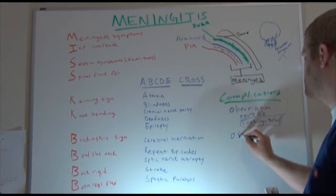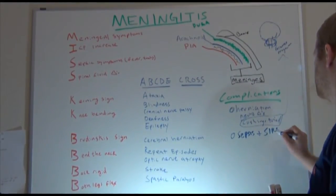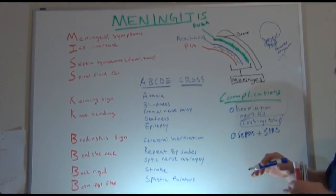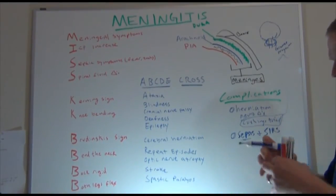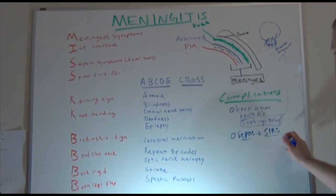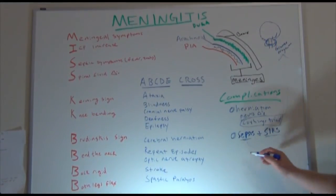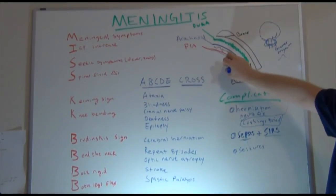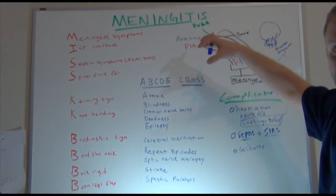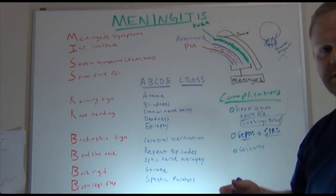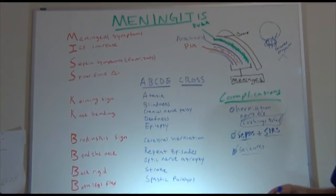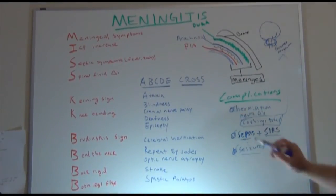Other things to watch for are sepsis and SIRS — Systemic Inflammatory Response Syndrome. If meningitis is the result of a bacterial infection and that infection becomes severe, it can lead to sepsis, septic shock, and massively dilated vessels. You can also have seizures: as the inflammation occurs in contact with brain tissue and that brain tissue becomes irritated, we can have seizures. Put your patient on seizure precautions in the acute period, and monitor temperatures, blood pressures, white blood counts, volume status, and do frequent neuro checks.